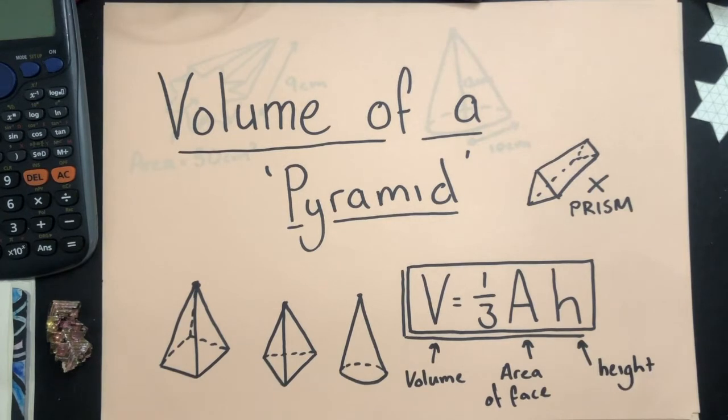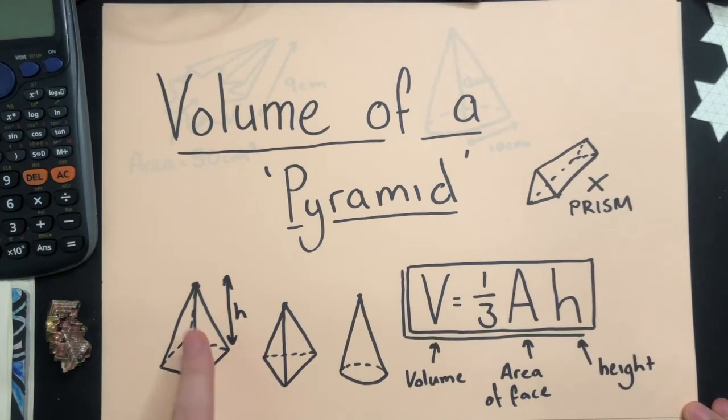And H is the height, which is the perpendicular distance from the face to the point. Like you can see here, it's not necessarily the same length as the edge.